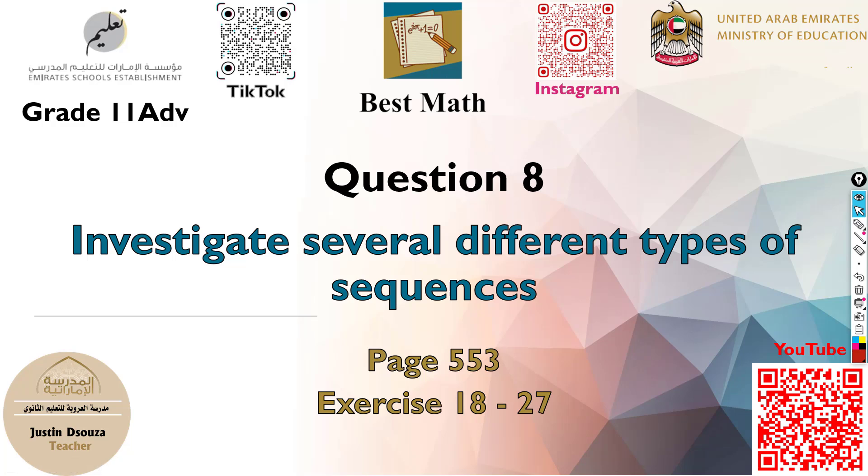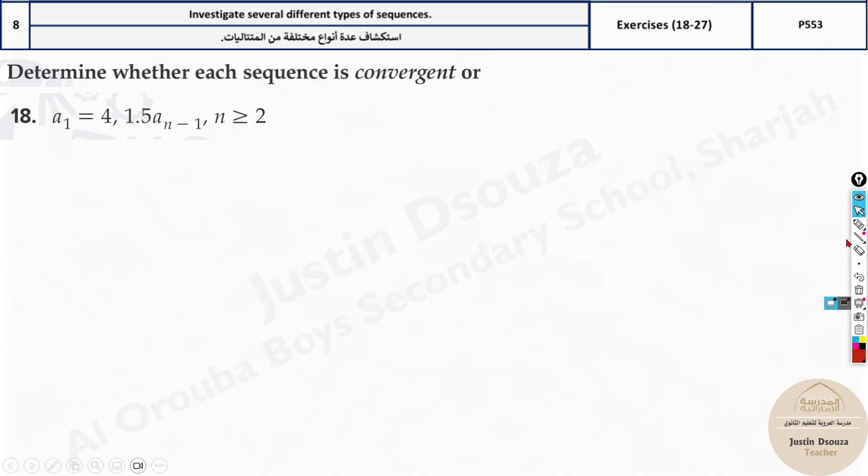Question A investigates several different types of sequences. We've done similar problems in part 2. Here we need to find which is convergent and which is divergent. You'll be given some values and a formula. Looking at this formula, this is an implicit formula - you cannot find the value of A5 without knowing A4. The formula specifies 1.5 times aₙ₋₁, meaning you need to know the previous term to find the next term. A1 will always be given in such cases. You can only find A2 or more.